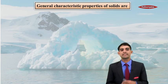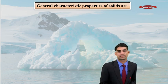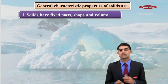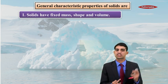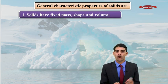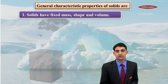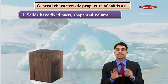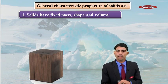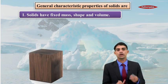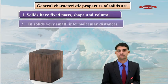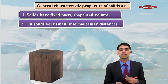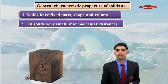Now, what are the general characteristic properties of solids? The first one: solids have fixed mass, shape, volume, and density. For example, this box has definite mass, definite volume, and definite shape. In solids, the intermolecular distance is very small, and the particles are very closely packed.